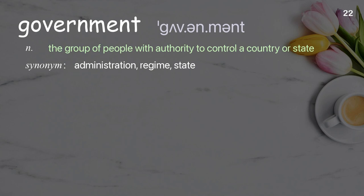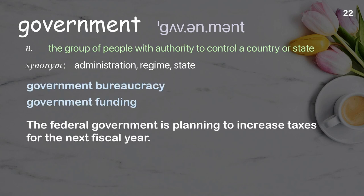Government: the group of people with authority to control a country or state. Examples: the government is planning to increase taxes for the next fiscal year.